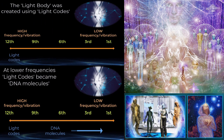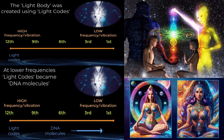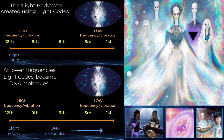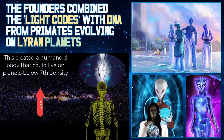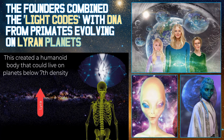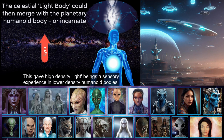One billion years ago, the founders created a light body to explore lower frequencies. The light body could interact with high-frequency forms across the galaxy but would pass right through lower-frequency or density forms, such as third-density planets. The light body was created using light codes. At lower frequencies, light codes became DNA molecules. The founders combined the light codes with DNA from primates evolving on Lyran planets, creating a humanoid body that could live on planets below 7th density. The celestial light body could then merge with a planetary humanoid body — or incarnate — giving high-density light beings a sensory experience in lower-density humanoid bodies.